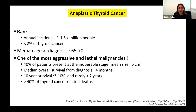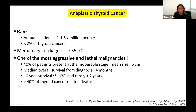Anaplastic thyroid cancers are a very rare form of thyroid cancer. The annual incidence is between 1 to 1.5 per million people. It represents less than 2% of all thyroid cancers. The median age at diagnosis is around 65-70 years old, and it is one of the most aggressive and lethal malignancies. 40% of patients present at inoperable stage with a median tumor size of 6 cm. The median overall survival from diagnosis is 4 months, the 10-year survival is 3 to 10%, and ATC represents more than 40% of thyroid-specific cancer-related deaths.